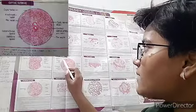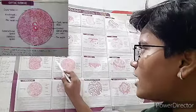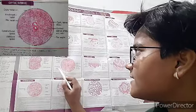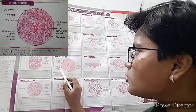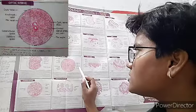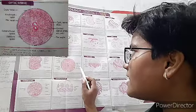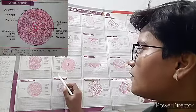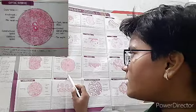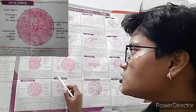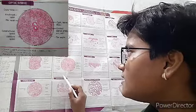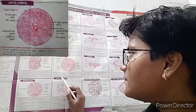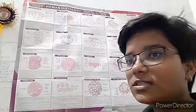Now the optic nerve. Visible structures include dura mater, arachnoid mater, pia mater, subarachnoid space containing CSF, subdural space, optic nerve fibers, central retinal artery, and vein, and pial septa. The optic nerve is covered by meninges — dura mater, arachnoid mater, and pia mater. The central retinal artery and vein are seen. Pial septa divide the nerve into bundles.